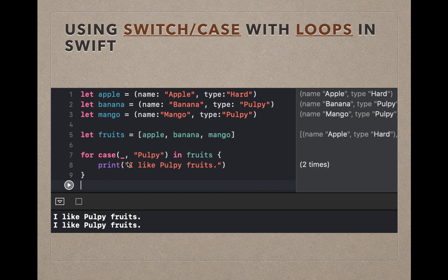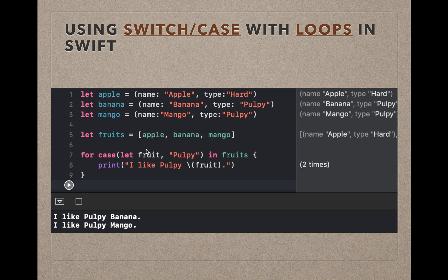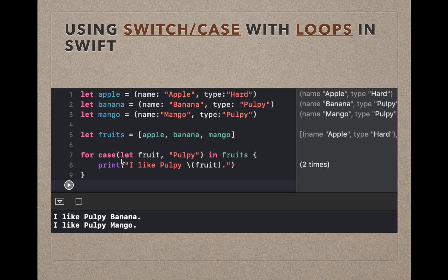If I also want to know the name of the fruit, I replace the underscore with let fruit. This allows the print statement to access the first element of the tuple. The output becomes 'I like pulpy banana' and 'I like pulpy mango'.